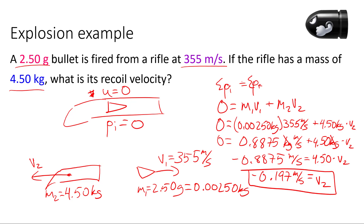The recoil velocity is about negative 0.2 meters per second. The rifle's mass is over a thousand times the mass of the bullet, so its speed is less than one-thousandth the speed of the bullet — consistent with conservation of momentum.